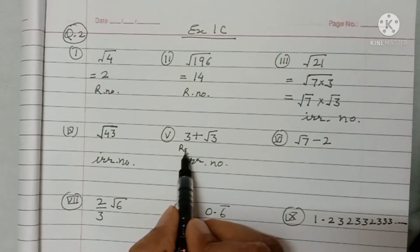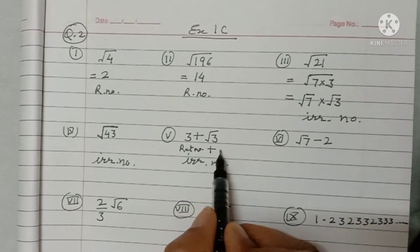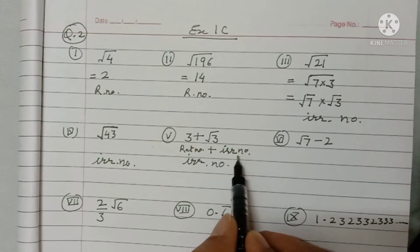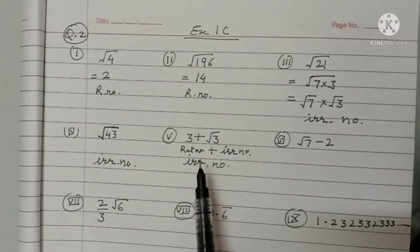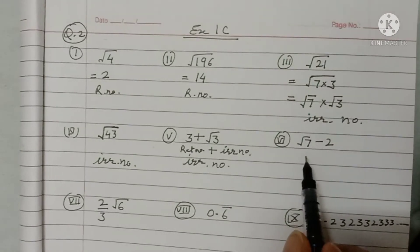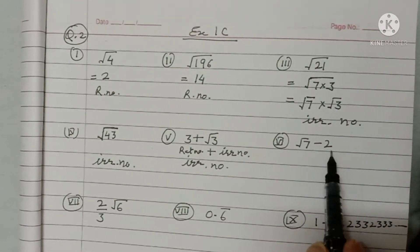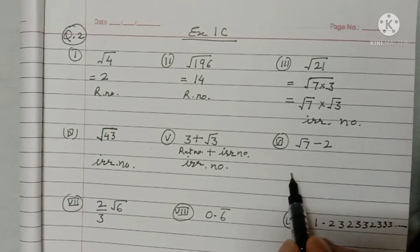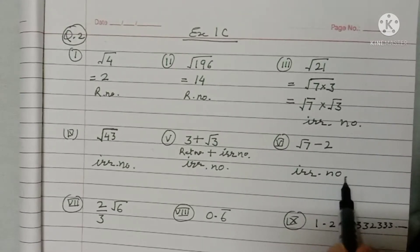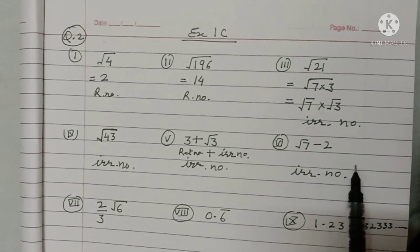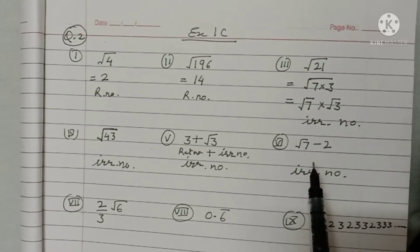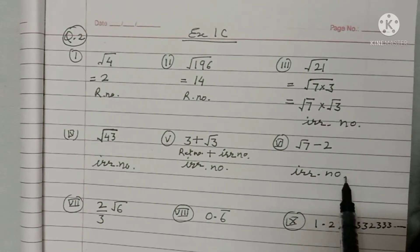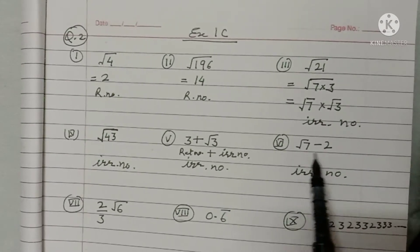The next part involves the difference of a rational number and an irrational number. By the property, the sum, difference, product, and quotient of an irrational number with another always gives an irrational number. So this becomes an irrational number.